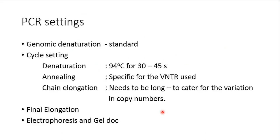Now let's look at the PCR settings. It is similar to a conventional PCR: genomic denaturation at 94°C for 10 minutes, followed by classical PCR cycles — denaturation, then annealing. The annealing temperature will depend on which VNTR marker you are using and which primers are used, so each VNTR will have a different annealing temperature.